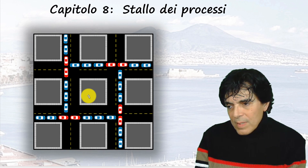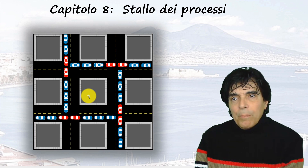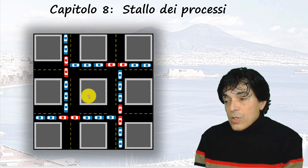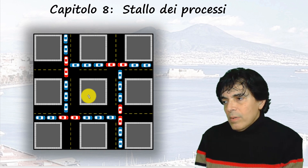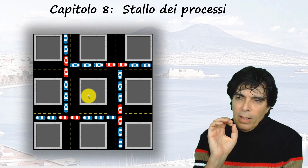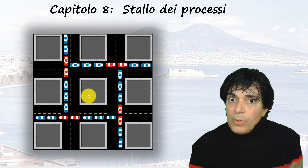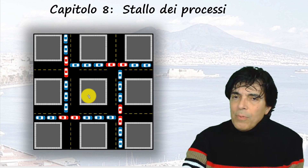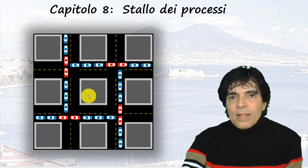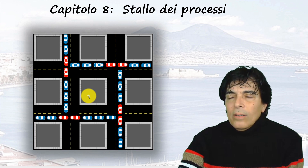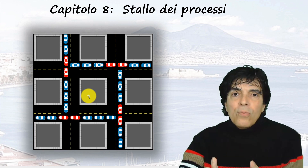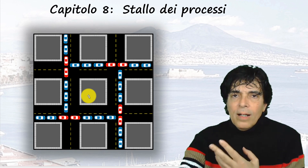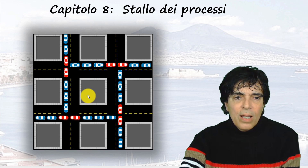È come un lavandino con un tappo: basta togliere il tappo e tutta l'acqua defluisce. Anche in un sistema informatico, se si è intelligenti e si individua il punto esatto su cui intervenire, qualcosa di positivo può accadere. Bisogna poi capire quale macchina deve saltare: si parla di selezione della vittima. O perdiamo tutto, o ne perdiamo una sola — quale scegliamo per avere il danno minore?